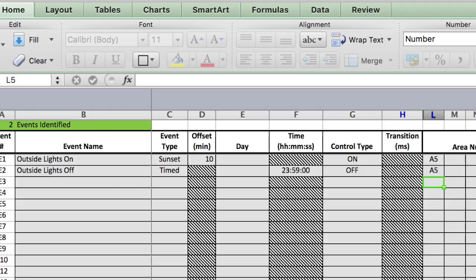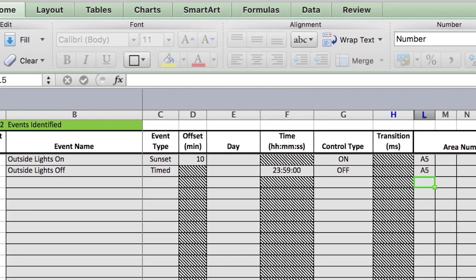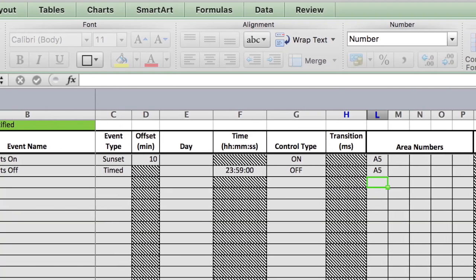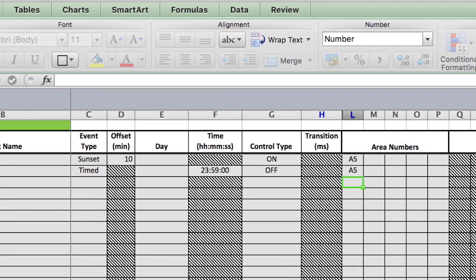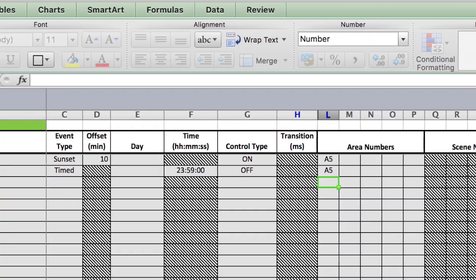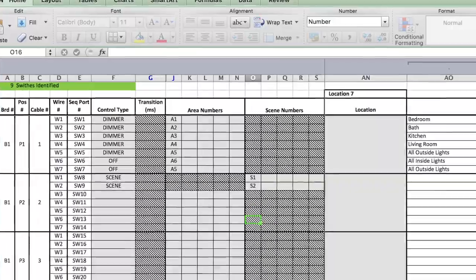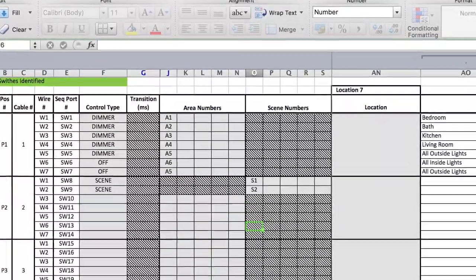Our lighting system also allows you to set up events that occur at any specific time of the day or night or sunrise or sunset. And using the simple spreadsheet, you configure the system to behave any way you want and change it as often as you'd like.